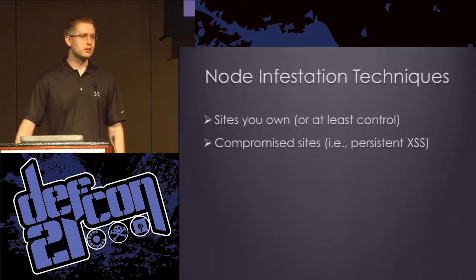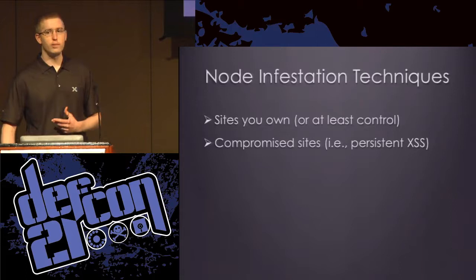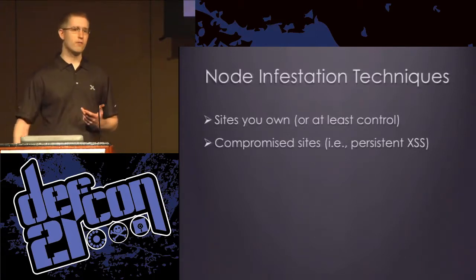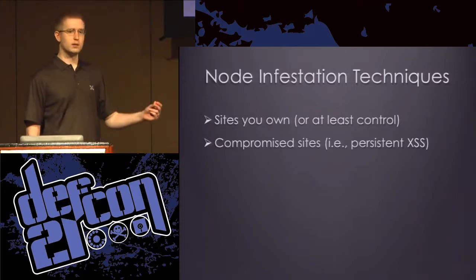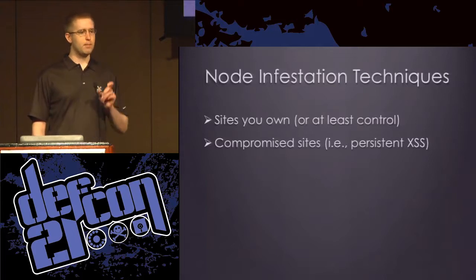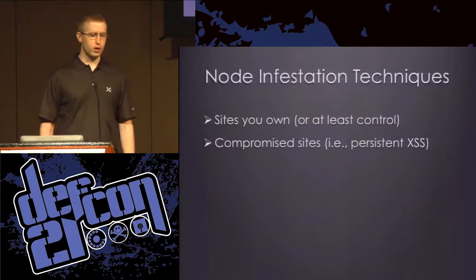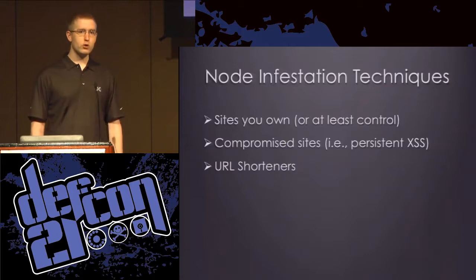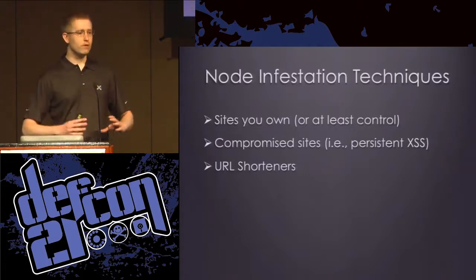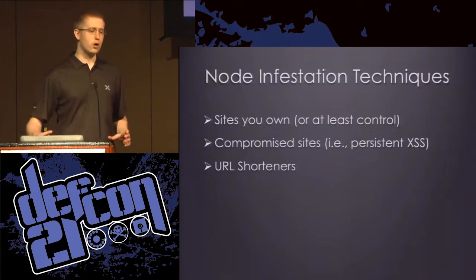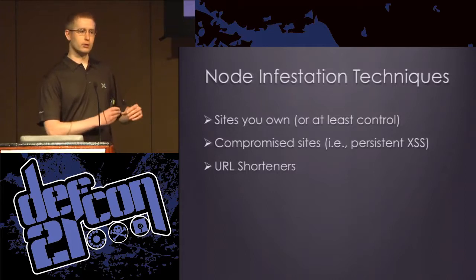Next is compromised sites. Any time there's a persistent cross-site scripting vulnerability where we can store a piece of JavaScript that executes every time somebody visits that site, we can include every visitor in our botnet. URL shorteners are another option — normally a URL shortener simply redirects to the target, but what if we load a full-screen iframe showing the intended URL while a second iframe runs our botnet code in the background.